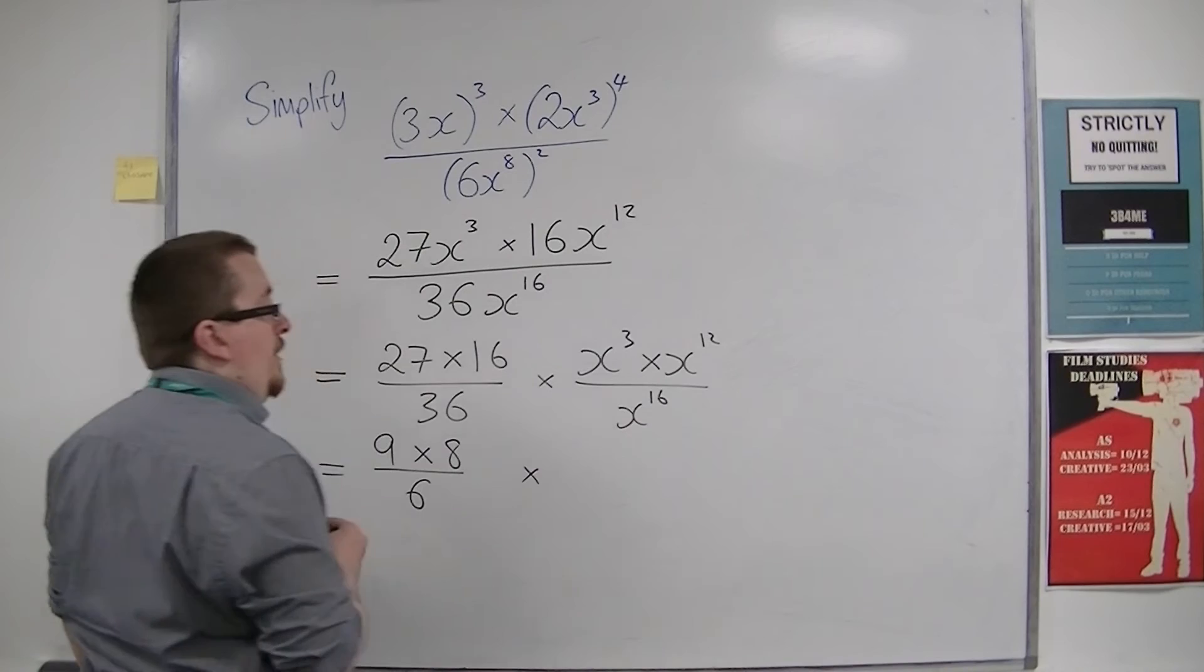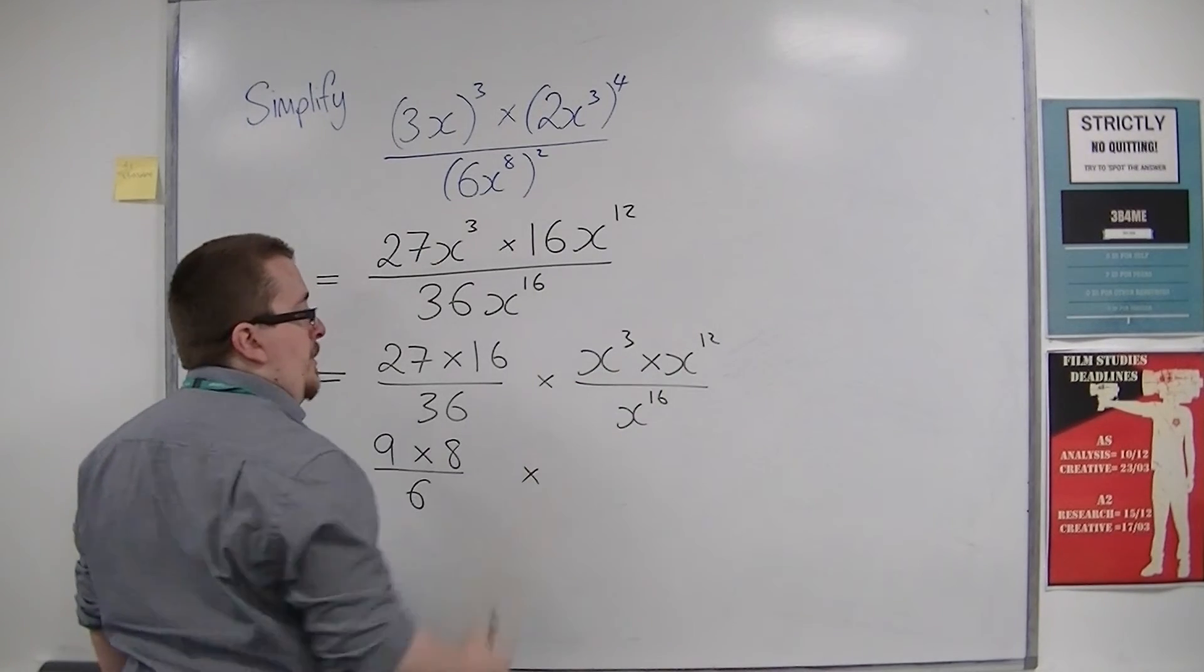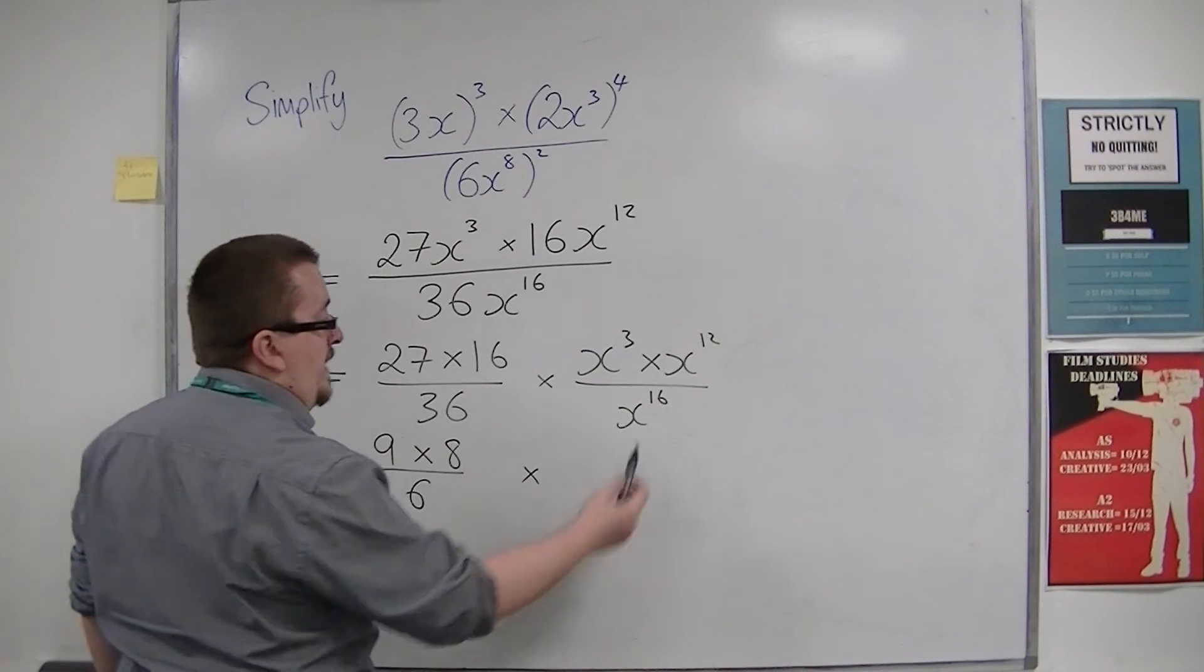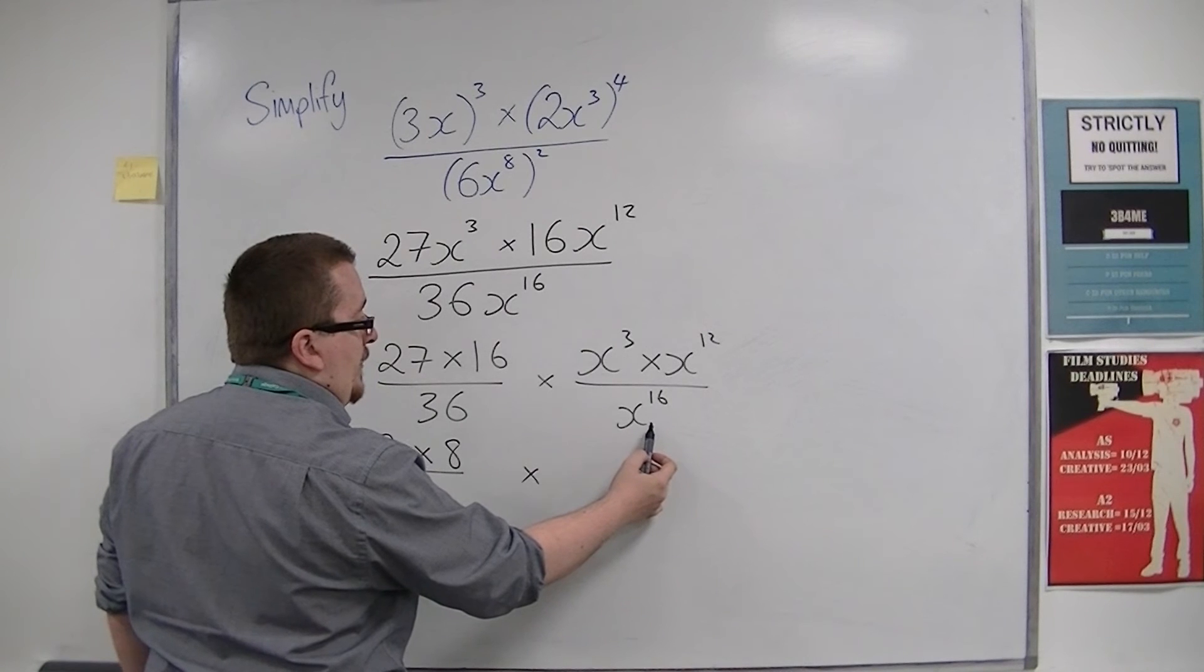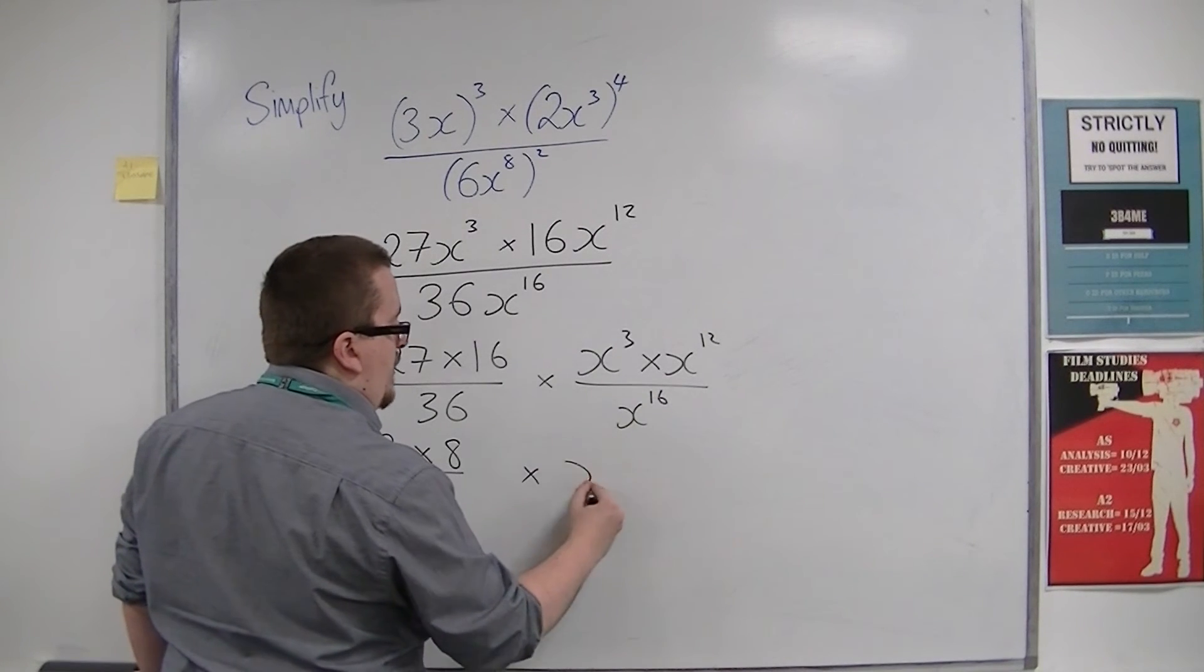And on this side, we've got x cubed times x to the 12, so x to the 15, divided by x to the 16, would be x to the minus 1.